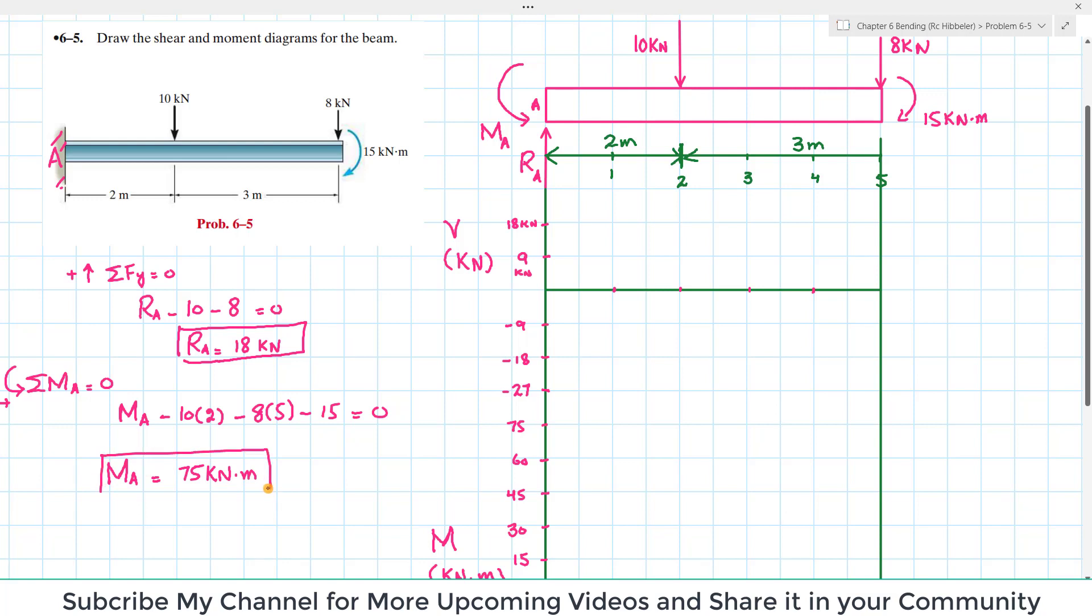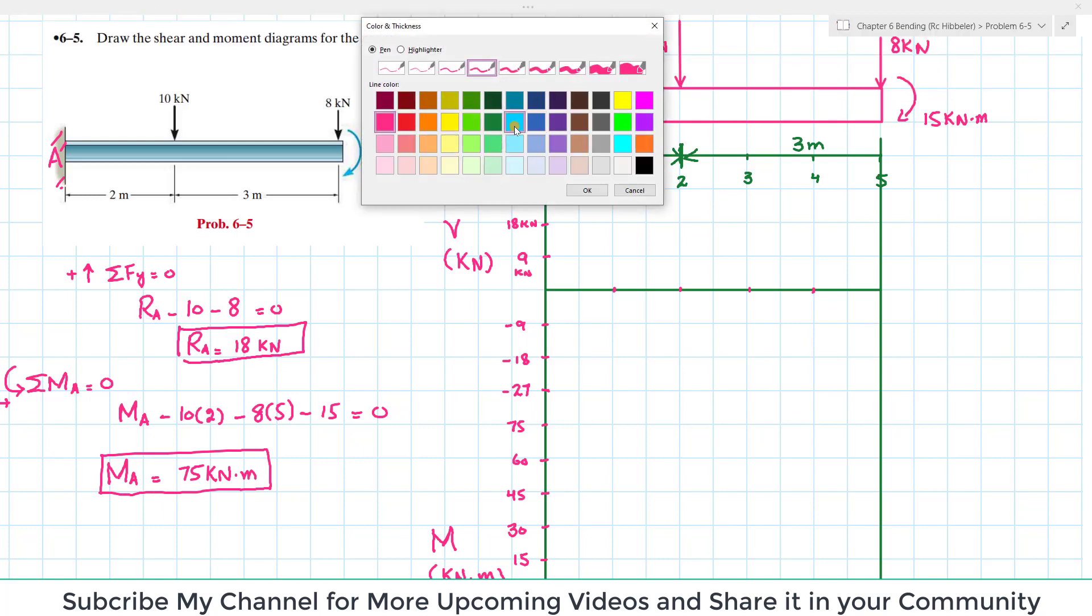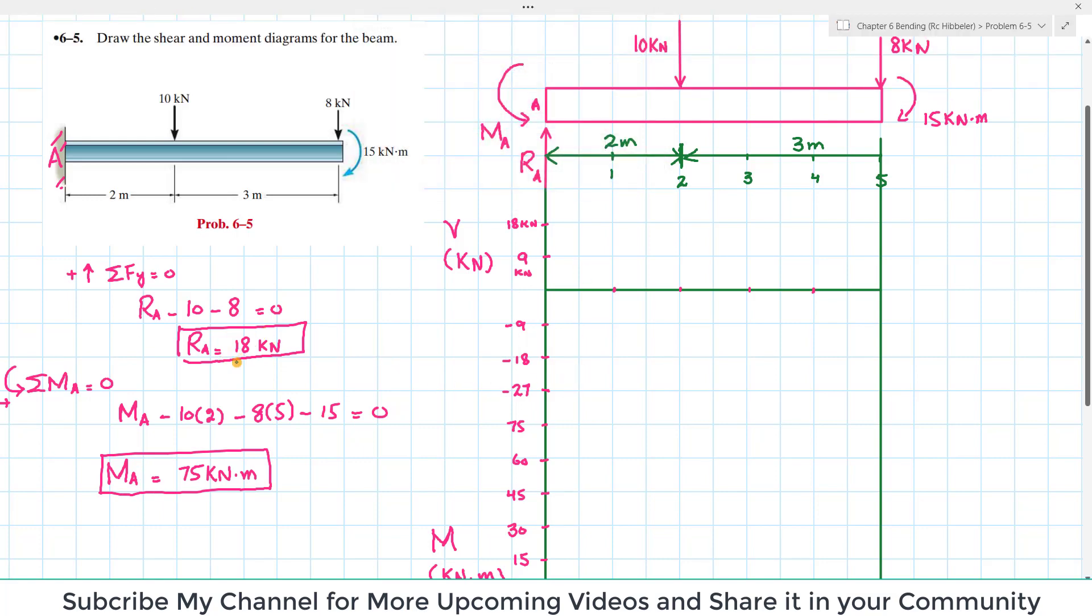Now we'll find the shear force and bending moment diagram. This is the length X and vertically we take shear force in kN. I've taken one box equals 9 kN, so second will be 18 and so on.